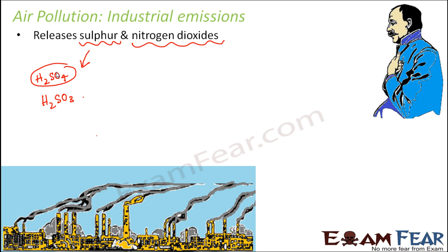Sulfur dioxide reacts to form sulfuric acid or sulfurous acid or sulfate particles. This sulfuric acid can in turn cause acid rain. The sulfate particles can be transported in breathable particulate material. If these particles are breathed in, they can cause nose and throat irritation, coughing, shortness of breath, or even a tight feeling around the chest.